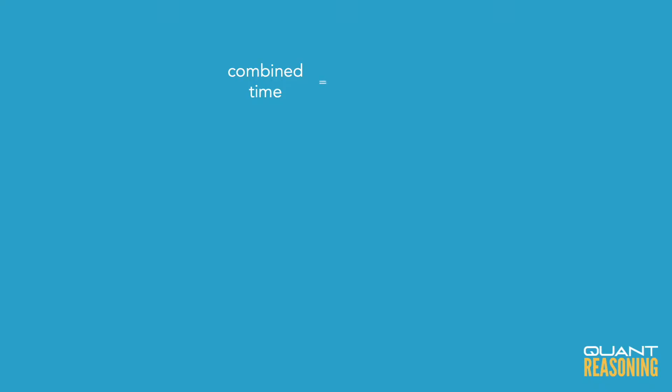The formula is: the combined time for two machines is equal to the product of the individual times divided by the sum of the individual times.